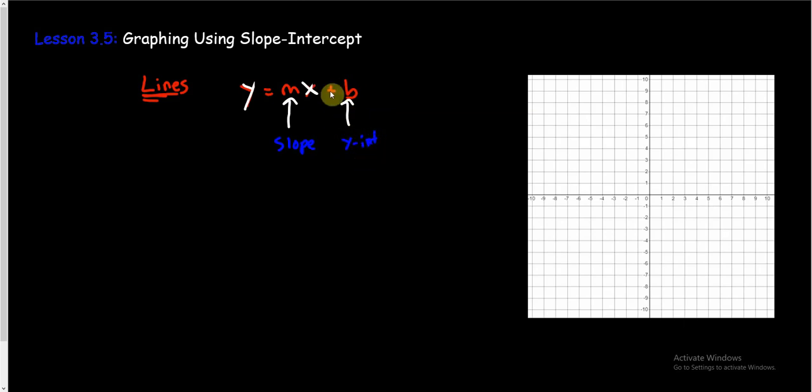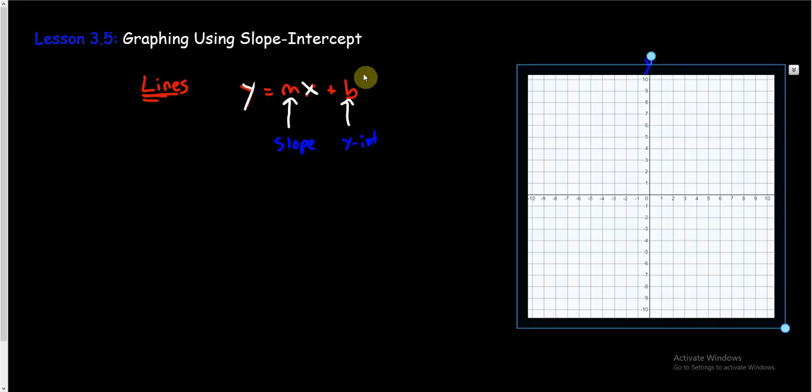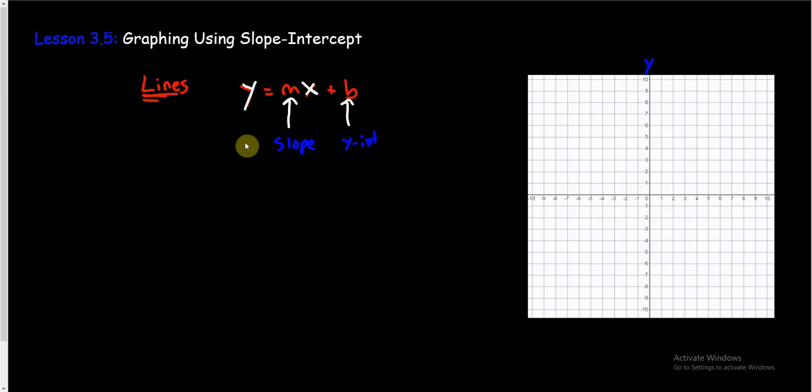The b is the y-intercept. Now first off, what is that on the graph? That is just where the line crosses this y-axis. So if this number was a 6, I know the graph crosses at the 6. I know where it crosses the axis. Now this is kind of good news because this should give us a fast way to graph these things.